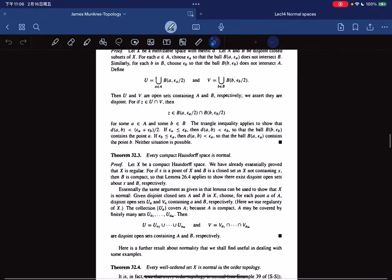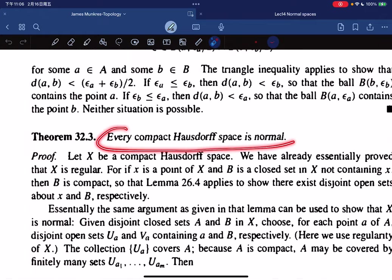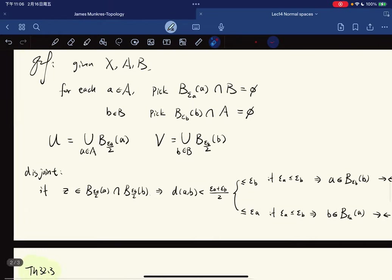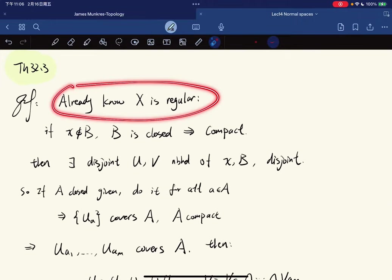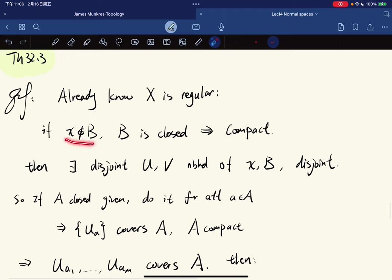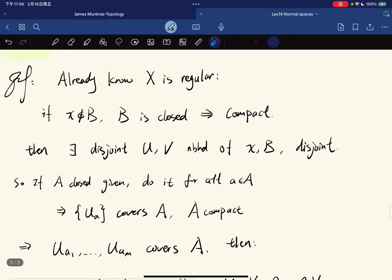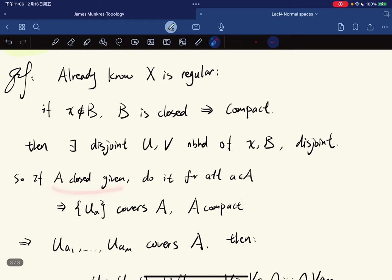Okay, so we're done. And lastly, is that every compact Hausdorff space is normal. So we already know that X is regular, because if x is not in B, B is closed, we know that B is compact. Then we know that there is this disjoint U, V neighborhood of x and B that is disjoint. So A is closed, given. We do this for all A.